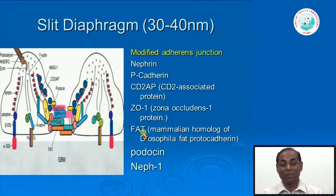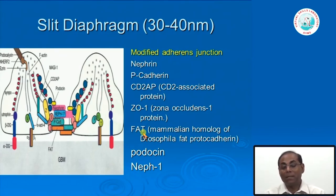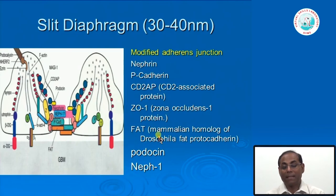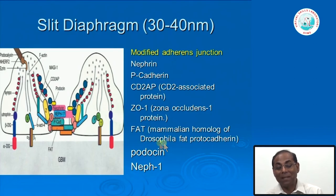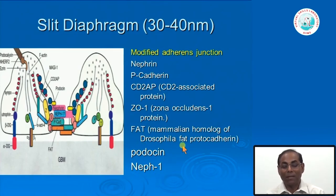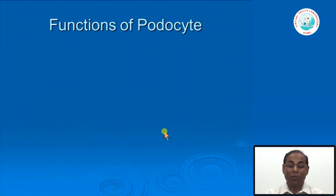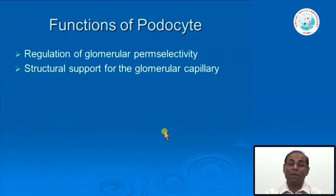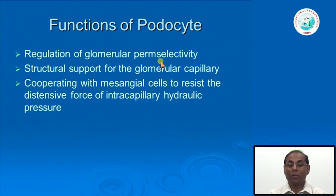The genes or proteins responsible for the podocyte glomerular filtration barrier include nephrin, P-cadherin, CD2AP (CD2-associated protein), ZO-1 (zona occludens protein 1), FAT (the mammalian homolog of Drosophila fat), protocadherin, podocin, and nephrin-1. These are different molecules responsible for maintenance of the slit pore.